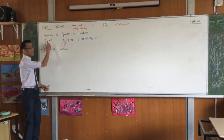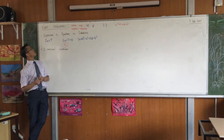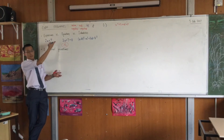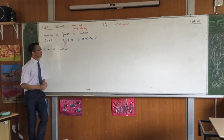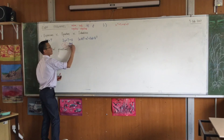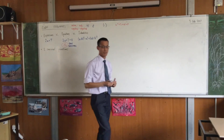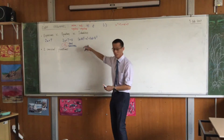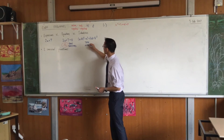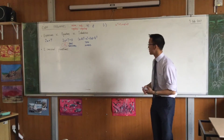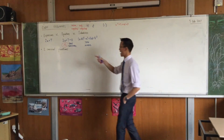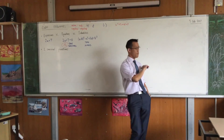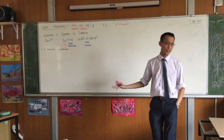So what do we have? An expression cannot be true or false — just like the word 'dog' cannot be true or false, there's no value statement. An equation can be true or false — it's true sometimes, though you can also write an equation that is never true. Lastly, an identity is not true sometimes — it's true always, irrespective of the values you throw in. Later this term we'll look at trigonometric identities — things that are true no matter what angles or values you put in. Always true.